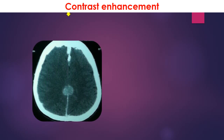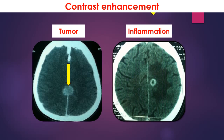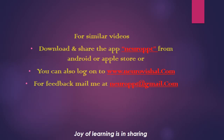Contrast enhancement is seen when the blood-brain barrier is disrupted, for example in case of tumor and in case of inflammation, which in this case is infectious inflammation.